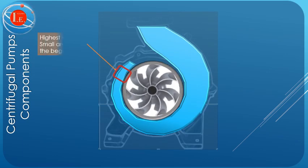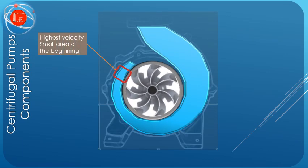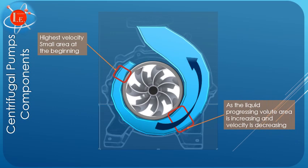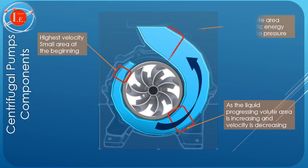Therefore, according to Bernoulli's principle, the volute converts kinetic energy into pressure by reducing speed while increasing pressure.